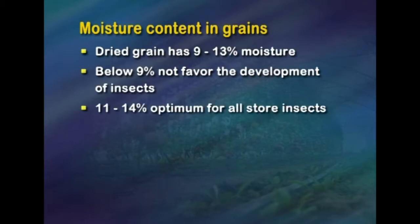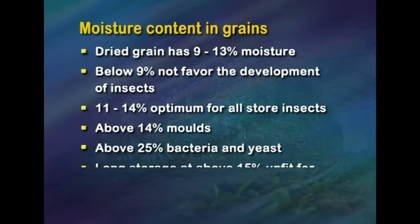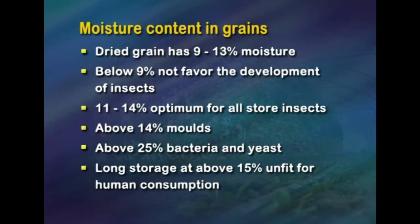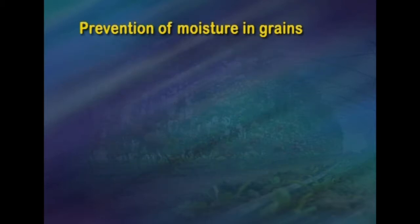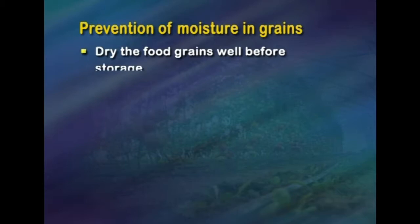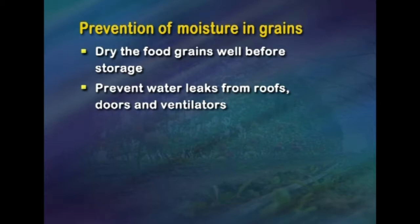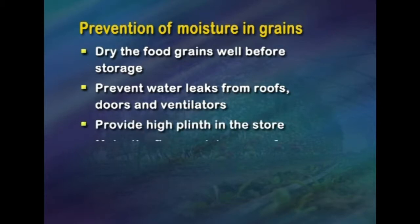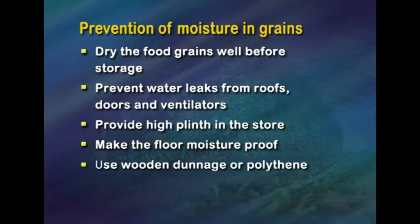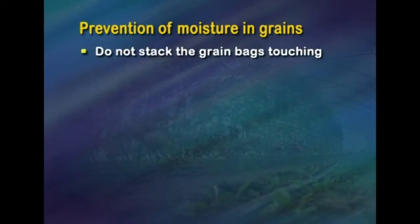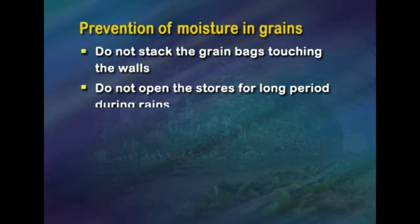Dry grains have 9 to 13 percent moisture. Less than 9 percent does not favor the development of insects; 11 to 14 percent is optimum for all stored insects; greater than 14 percent favors moulds; and greater than 25 percent favors bacteria and yeast. Long storage at greater than 15 percent is unfit for human consumption. To prevent moisture: dry food grains well before storage, prevent water leaks from roofs, doors and ventilators, provide high plinths in the store, make the floor moisture-proof, use wooden dunnage or polythene sheets, and do not stack grain bags touching the walls.